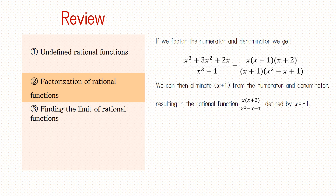If we factor the numerator and denominator, we get x(x + 1)(x + 2) over (x + 1)(x² − x + 1). We can eliminate (x + 1) from both the numerator and denominator to get the rational function x(x + 2) / (x² − x + 1), which is defined at x equals negative 1.